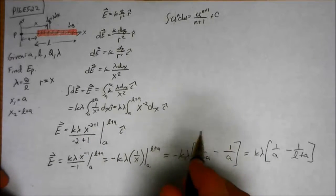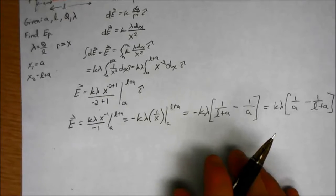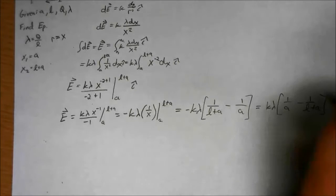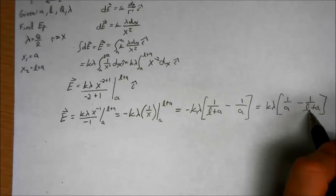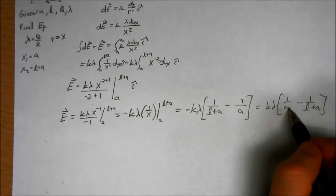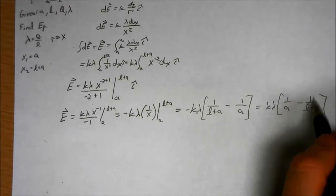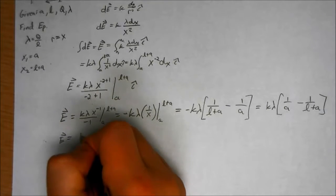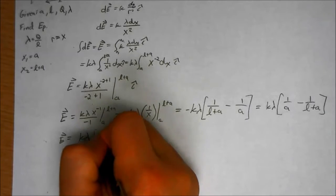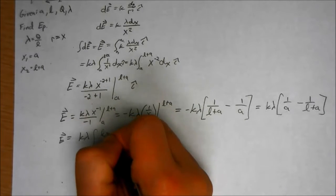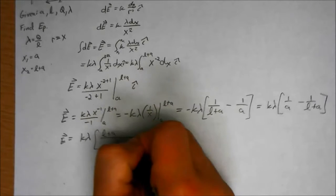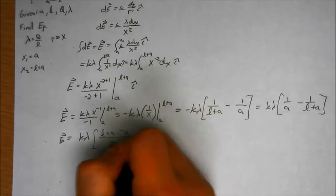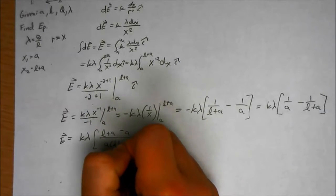Now, if I went to simplify this further, I could add these fractions by multiplying each side by L over A here and each side by A here. So E is equal to K lambda L plus A minus A over A times L plus A.